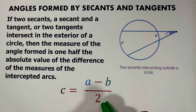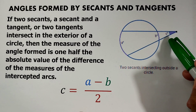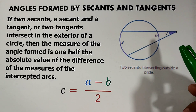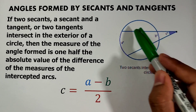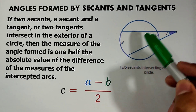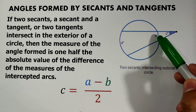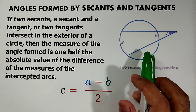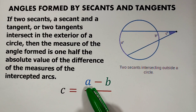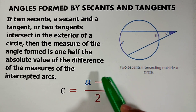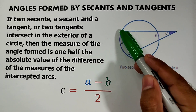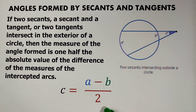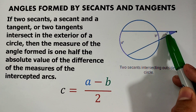So again, the angle formed — in this figure, the angle has a measure of C degrees — and that measure is half of the difference of the intercepted arcs. Our intercepted arcs here are A and B, with measures A degrees and B degrees. The formula is: C = (A − B) / 2, where B is smaller than A, and C is the measure of the angle.